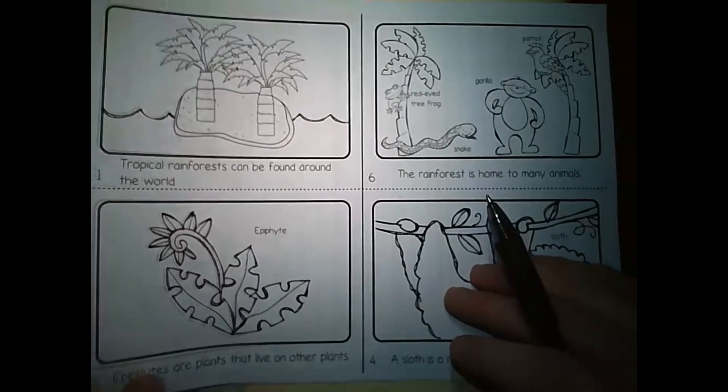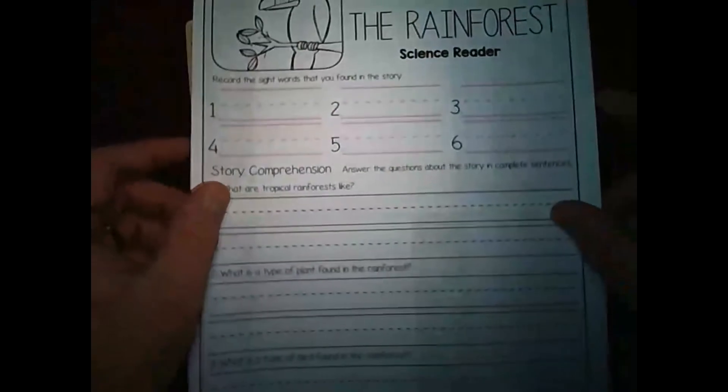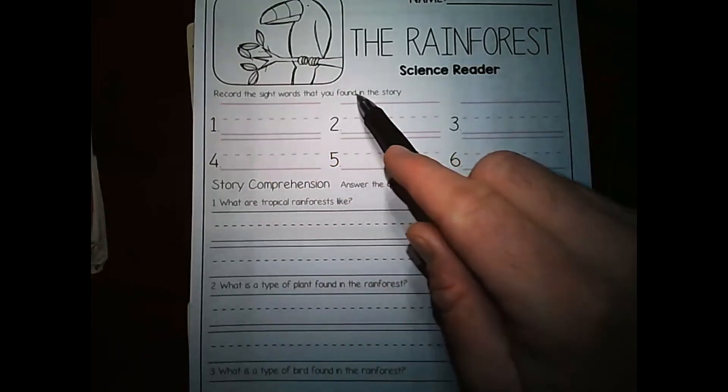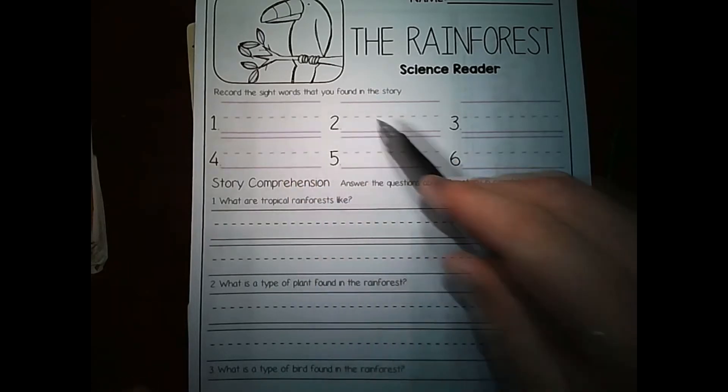Let's go ahead and move this out of the way now, and we'll get looking at the worksheet that goes along with it. Remember, the first two pages, they're just information, and they're for you to color if you want. Otherwise, this is where the real work is for our science for the week. So you're going to put your name up at the top, and it tells you that this is the Rainforest Science Reader worksheet. Well, we just read the science reader, just a little bit out of order. It says record the sight words that you found in the story. And you need at least six sight words. Sight words can be words like the, is, in, hot, wet. So any words that you found like that within the science reader, go ahead and write them down right here.